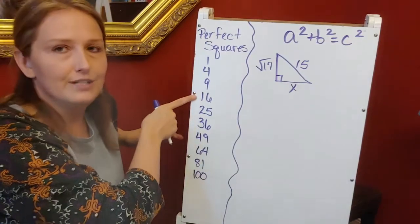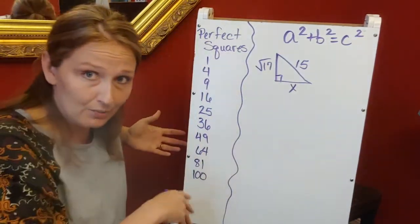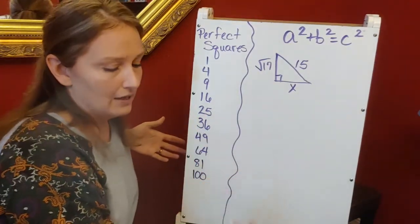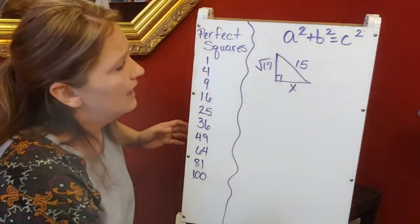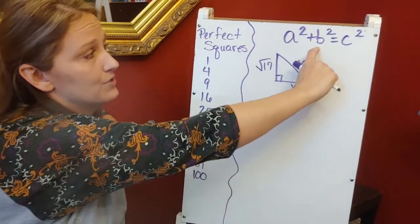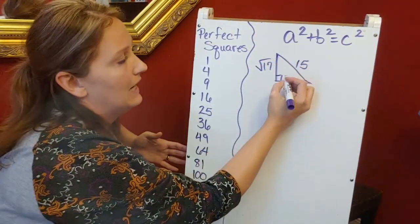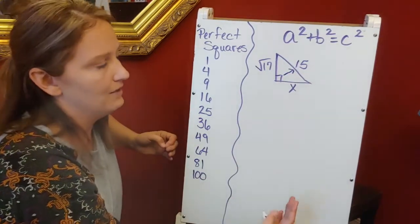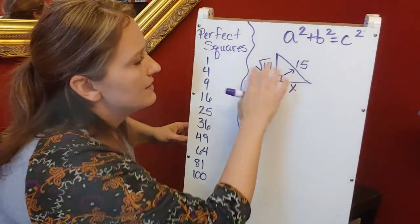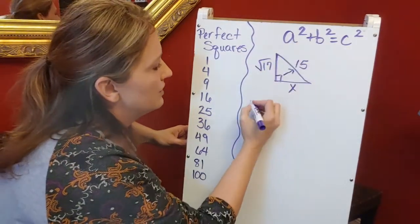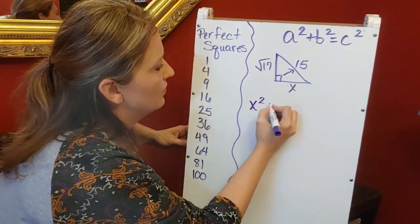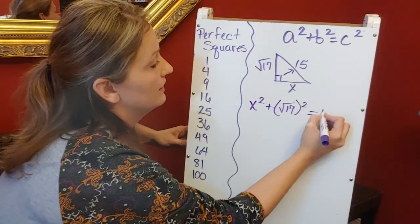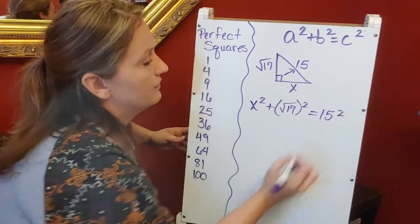We're going to use that when we simplify radicals. I'm told this is a right triangle, so I'm using Pythagorean theorem. My hypotenuse is always directly across from the right angle—it's my longest side. I'm going to substitute these numbers into the equation: x² + (√17)² = 15².